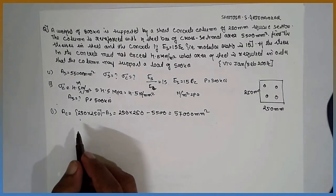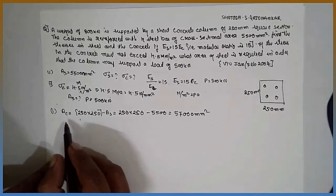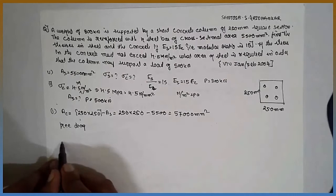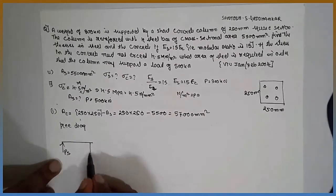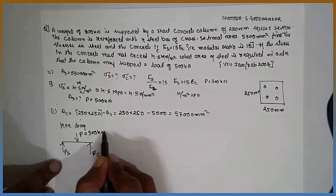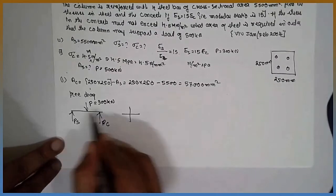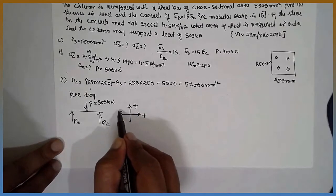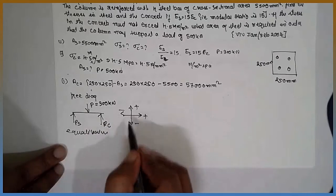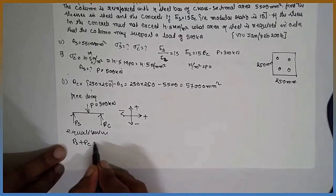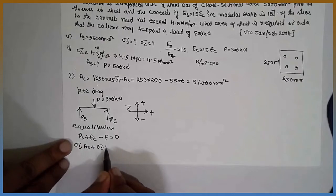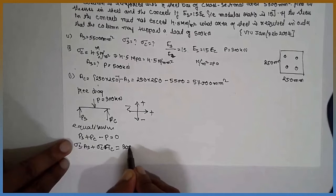Now, the free body diagram. As the load acts over the concrete column containing the steel, both steel and concrete will resist the load. The load applied is 300 kN. For equilibrium: PS + PC − P = 0, therefore σS·AS + σC·AC = 300 × 10³.